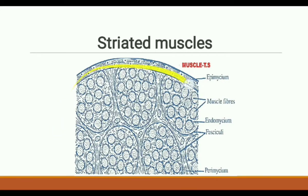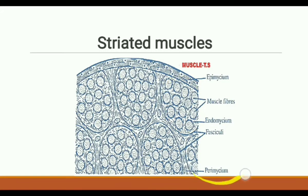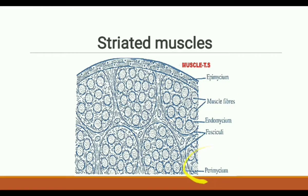Each muscle fiber is surrounded by connective tissue. The connective tissue surrounding the entire muscle is called epimysium. The connective tissue surrounding each muscle bundle is perimysium. The connective tissue surrounding individual muscle cells is endomysium. When epimysium, perimysium, and endomysium extend beyond the muscle, they form a tendon. If the tendon is flat and broad, it may be called an aponeurosis.